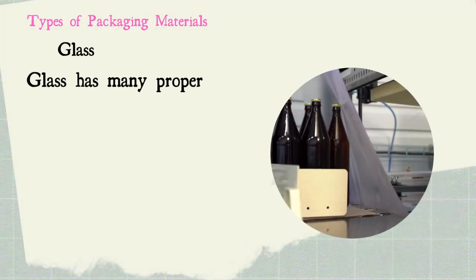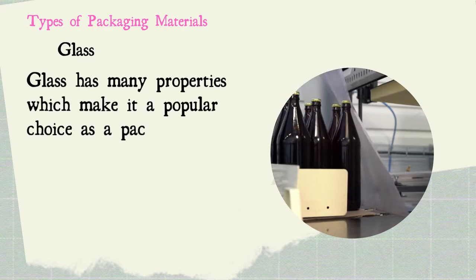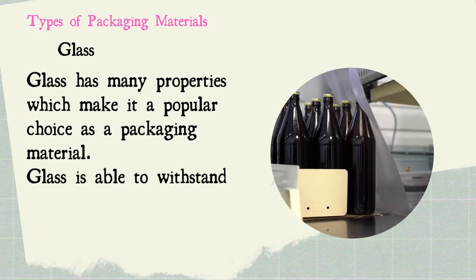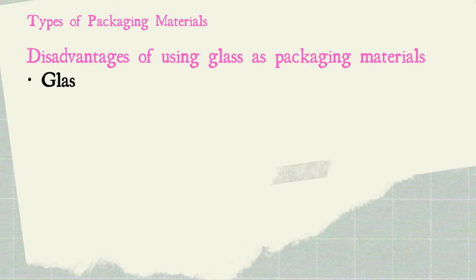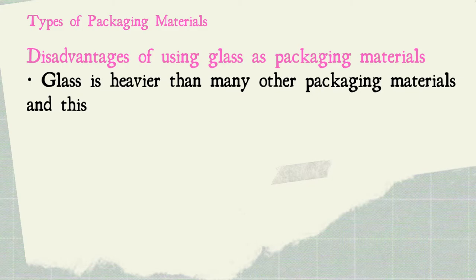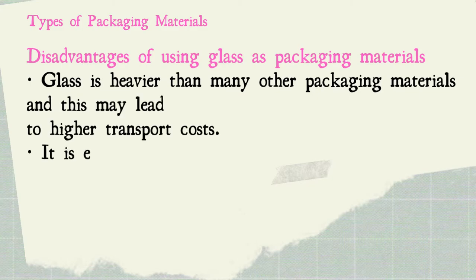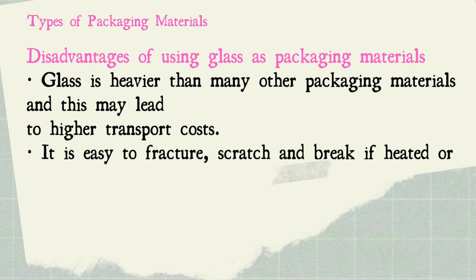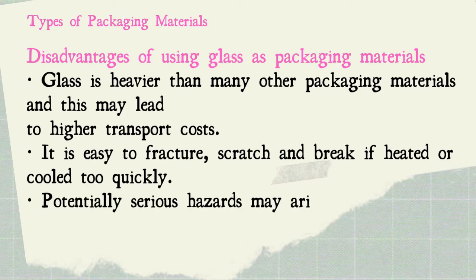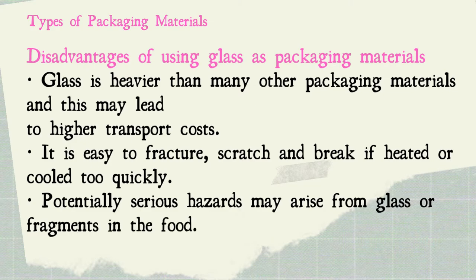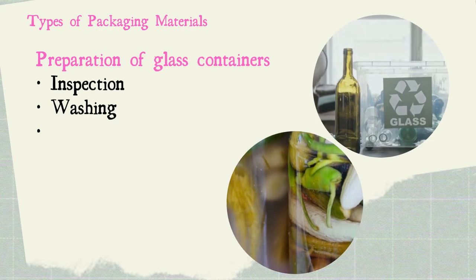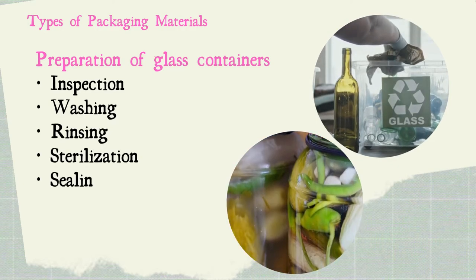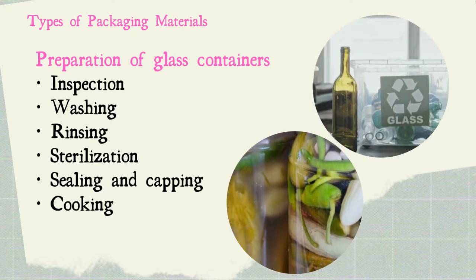Another packaging material is glass. Glass has many properties which make it a popular choice as a packaging material. Glass is able to withstand heat treatments such as pasteurization and sterilization. However, glass is heavier than many other packaging materials, which may lead to higher transport costs. It is easy to fracture, scratch, and break if heated or cooled too quickly. Potentially serious hazards may arise from glass fragments in the food. The preparation of glass containers involves: first, inspection; second, washing; next, rinsing; then sterilization; sealing and capping; and finally, cooking.